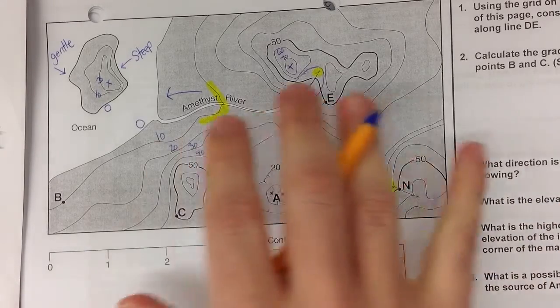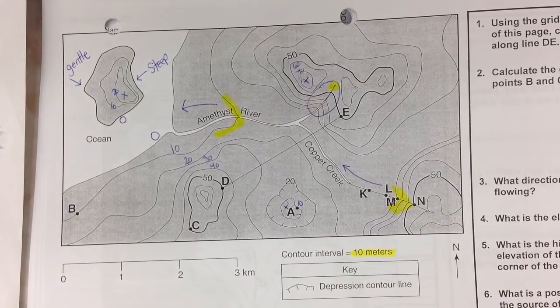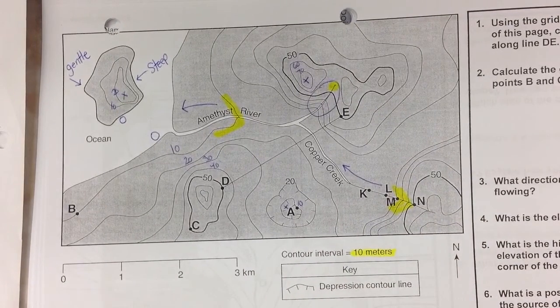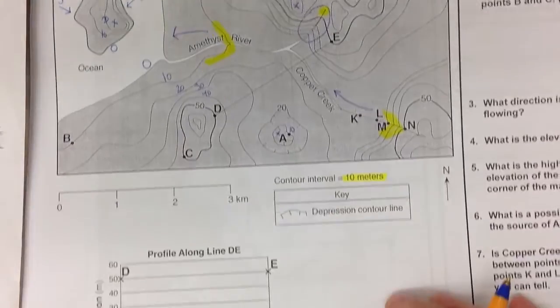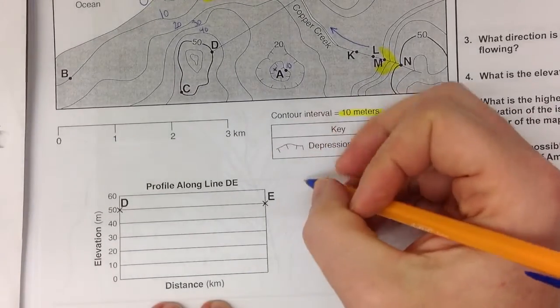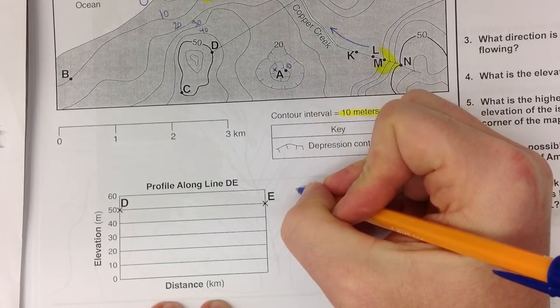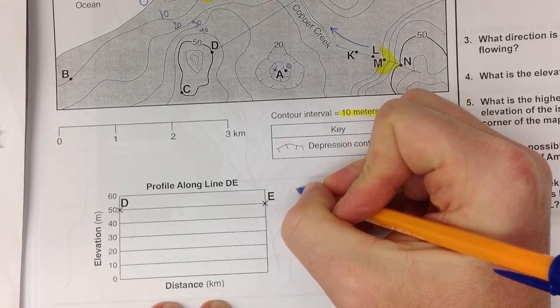So those are just your basic characteristics that you would find on a topographic map. Now, there's a couple other things that we can determine. And the first thing I want to discuss with you is how to determine gradient. We can figure out mathematically how steep a slope is going to be.